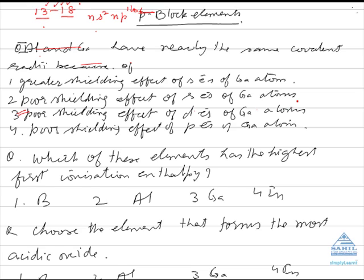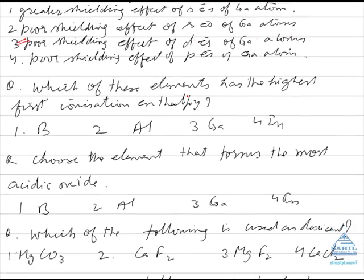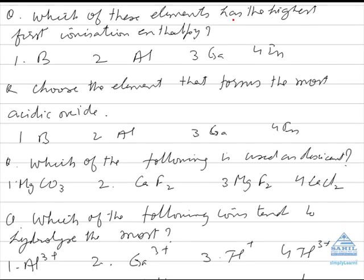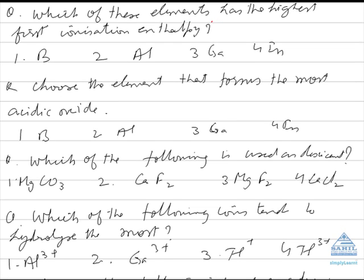Which of these elements has the highest first ionization enthalpy? Ionization enthalpy is the amount of energy required to remove the electron from the gaseous state of that atom. In the case of the 13th group, the electron is being removed from the p orbital. As we move down the group, ionization enthalpy decreases, so boron will have the highest first ionization enthalpy.